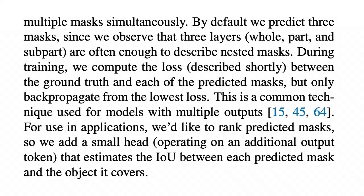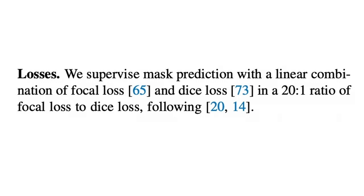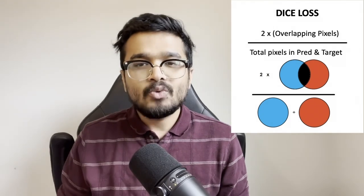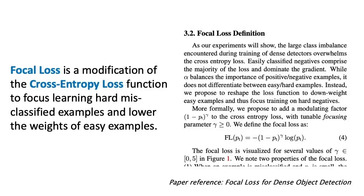For calculating the loss, the authors first calculate the IOU or intersection over union score for each of the predicted masks with respect to the ground truth. The mask that has the highest IOU score is then used to compute the loss. They use a combination of two losses for training the mask output: the focal loss and the dice loss. The dice loss is similar to the IOU loss in the sense that it also measures how well the prediction segment overlaps with the target segment. The focal loss is a modification of the cross entropy loss such that it assigns higher weights to examples that the model is performing poorly on and lower weights of easier examples that the model is already doing well on.